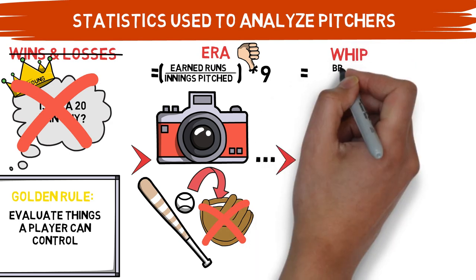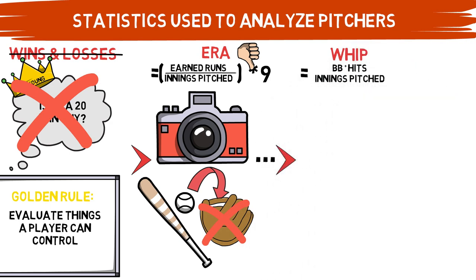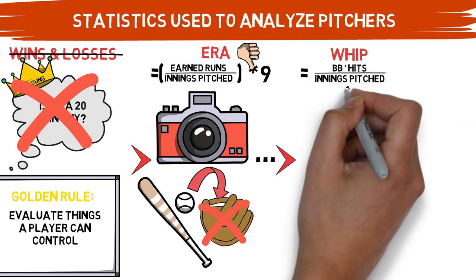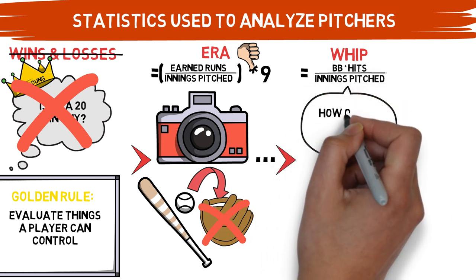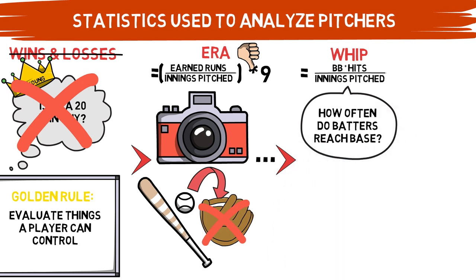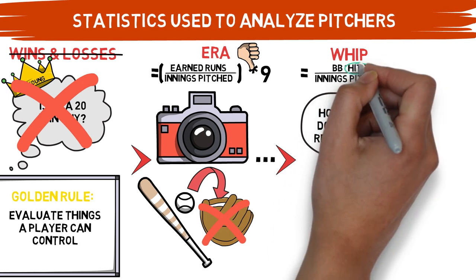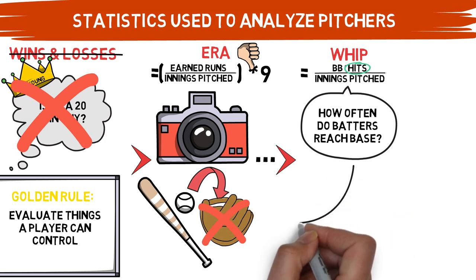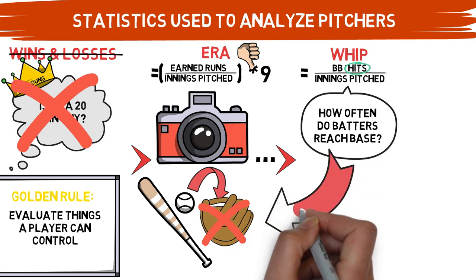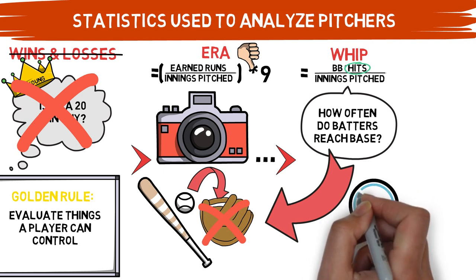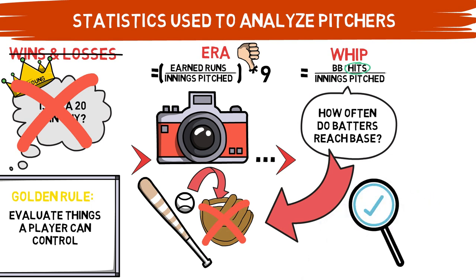The problem with these first two statistics is that they rely on the defense and things out of a pitcher's control. That brings us to WHIP. WHIP stands for Walks Plus Hits Per Innings Pitched, which is exactly how you calculate this statistic. It is a measure of how often a pitcher allows a batter to reach base. It's a pretty easy statistic that I use occasionally, but it still relies on hits — which is the same issue we had with ERA. A hit doesn't always mean that the pitcher performed poorly; it can also mean the defense performed poorly, not getting to a ball they maybe should have.